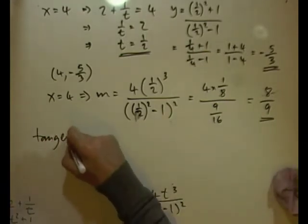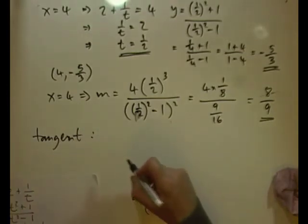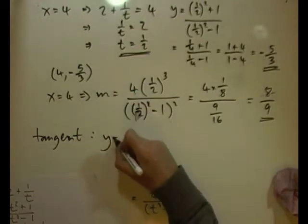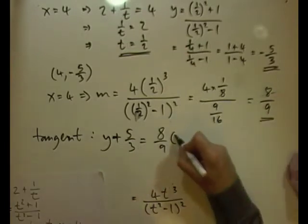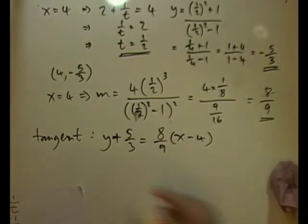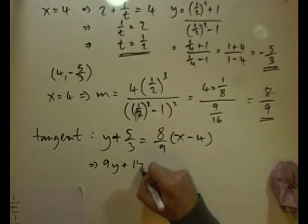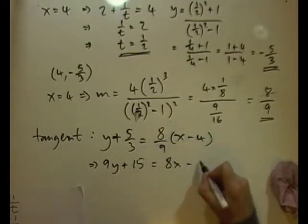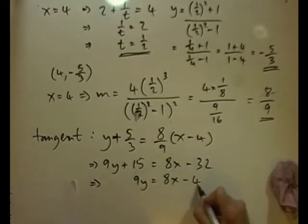Equation of the tangent — it's a straight line, so y − b = m(x − a). We have y + 5/3 = (8/9)(x − 4). Multiplying through by 9: 9y + 15 = 8x − 32. Rearranging: 9y = 8x − 47.